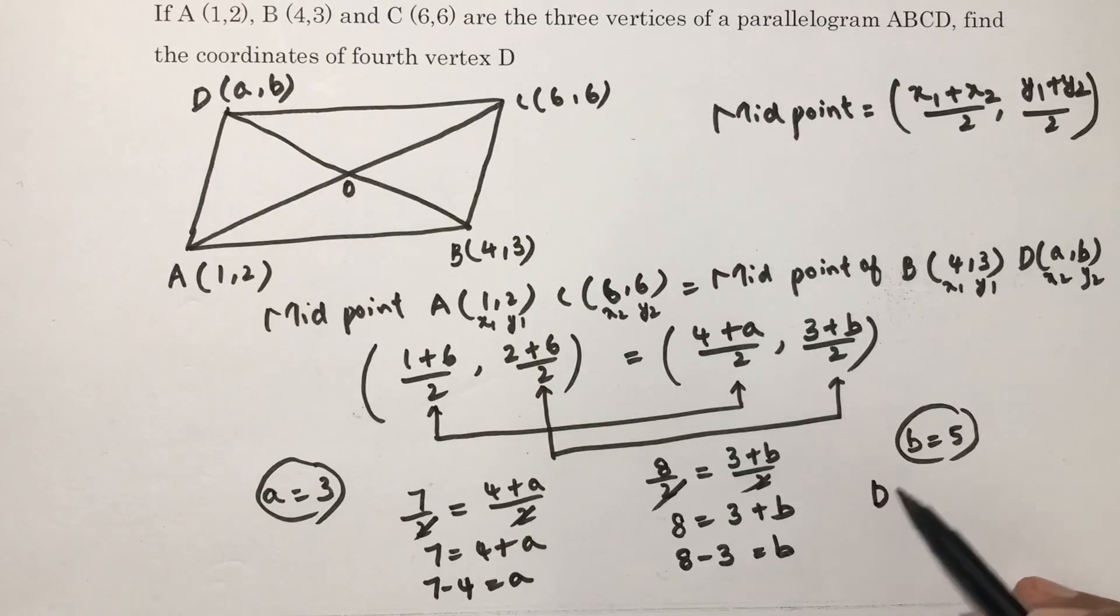So fourth vertex D, I considered A comma B, so the fourth vertex value is 3 comma 5.